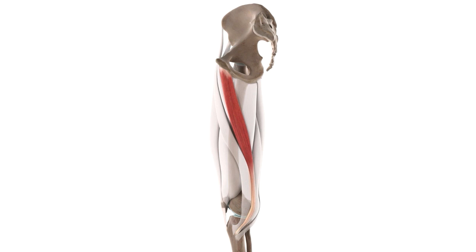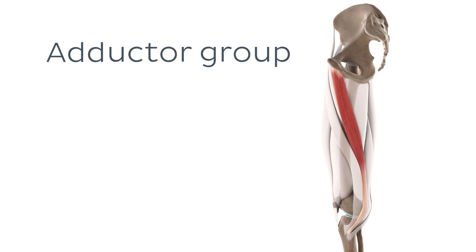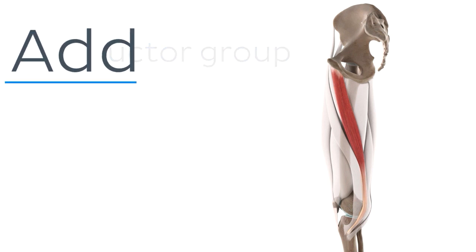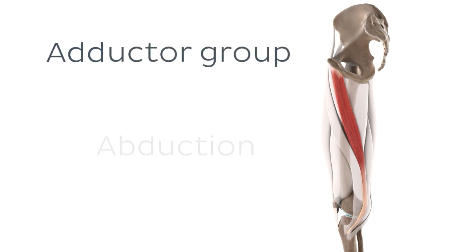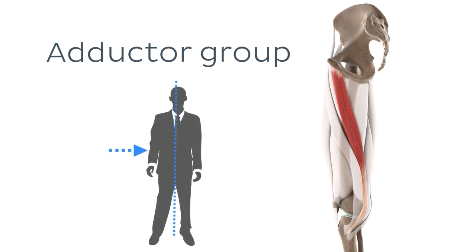Six of these muscles belong to what is known as the adductor group, which is mainly responsible for adduction of the thigh. Just to avoid any confusion, this is ADD — adduction — and not ABD — abduction. It's very easy to mix these two up. Contraction of these muscles pulls the thigh medially, bringing it closer to the midline of your body.